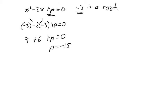So p equals -15, which means my equation is x² - 2x - 15 = 0. Now we know that -3 is a root, so when we factorize, (x + 3) is a factor.